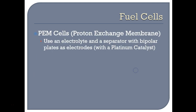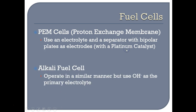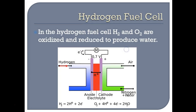Fuel cells use what is known as a proton exchange membrane. That uses an electrolyte and a separator with bipolar plates as electrodes. They also use platinum catalysts, which make these fuel cells very expensive. We're also going to talk about an alkali fuel cell, which works in the same way as the PEM fuel cells, only using hydroxide ions as the primary electrolyte instead of H⁺.